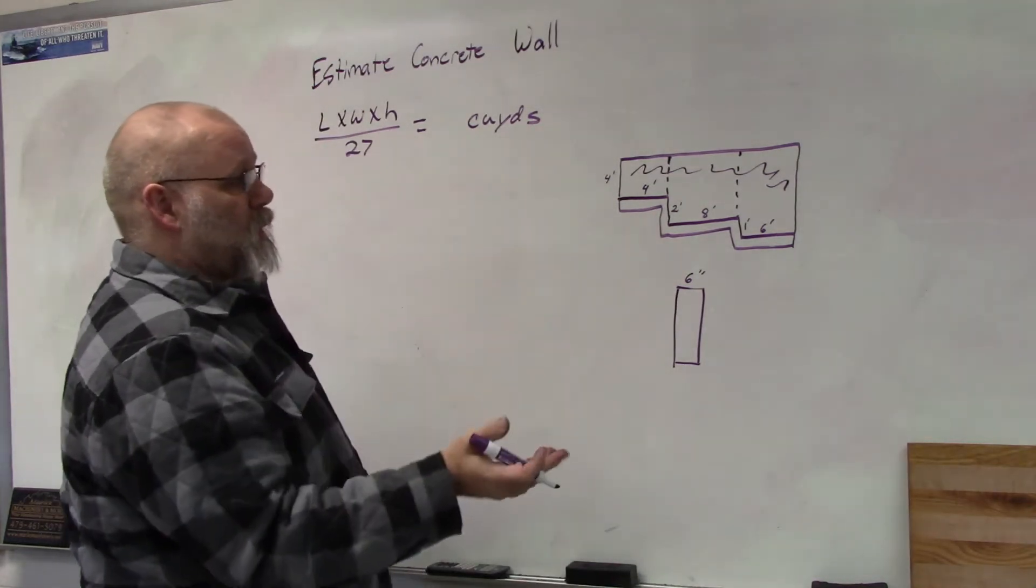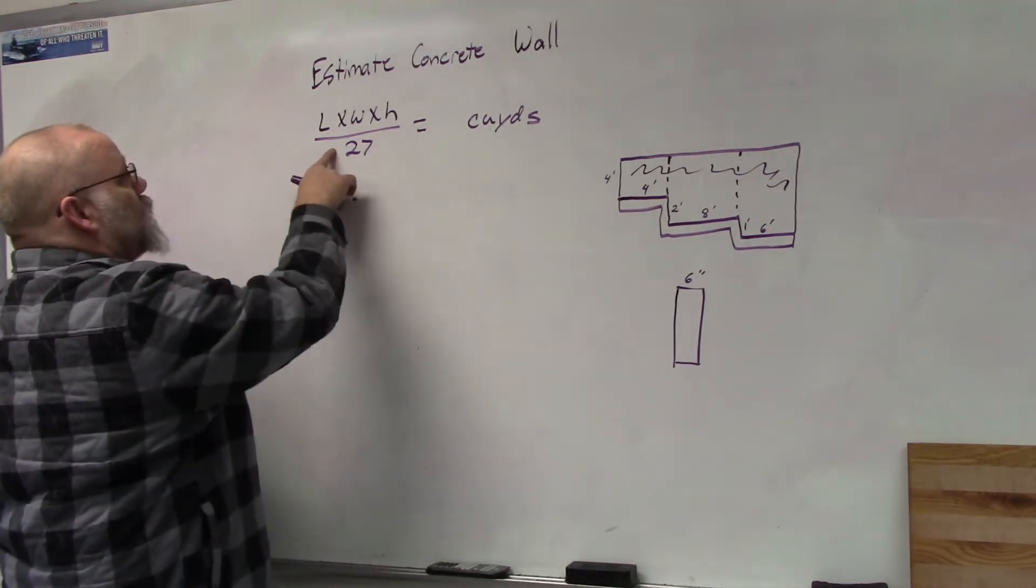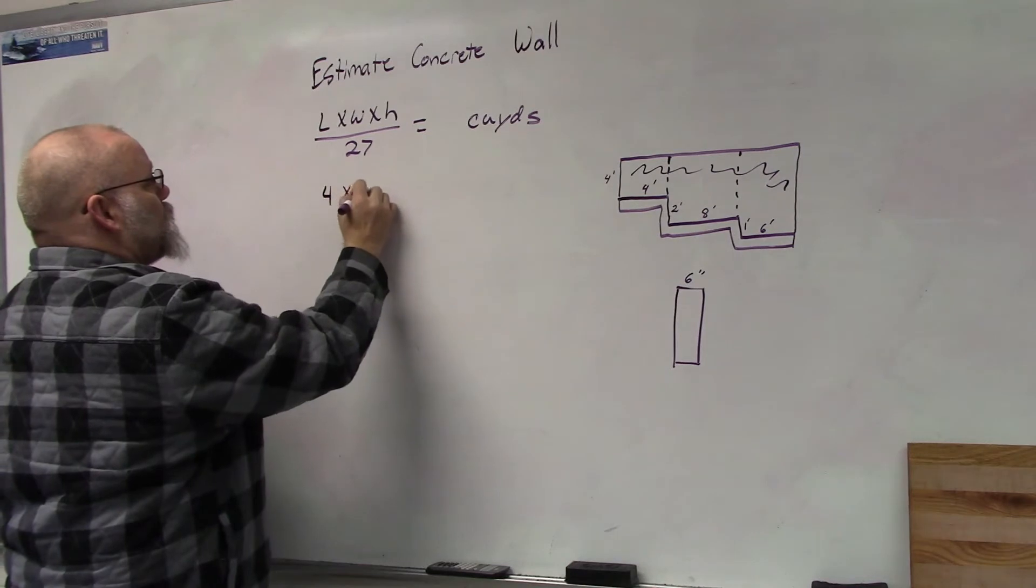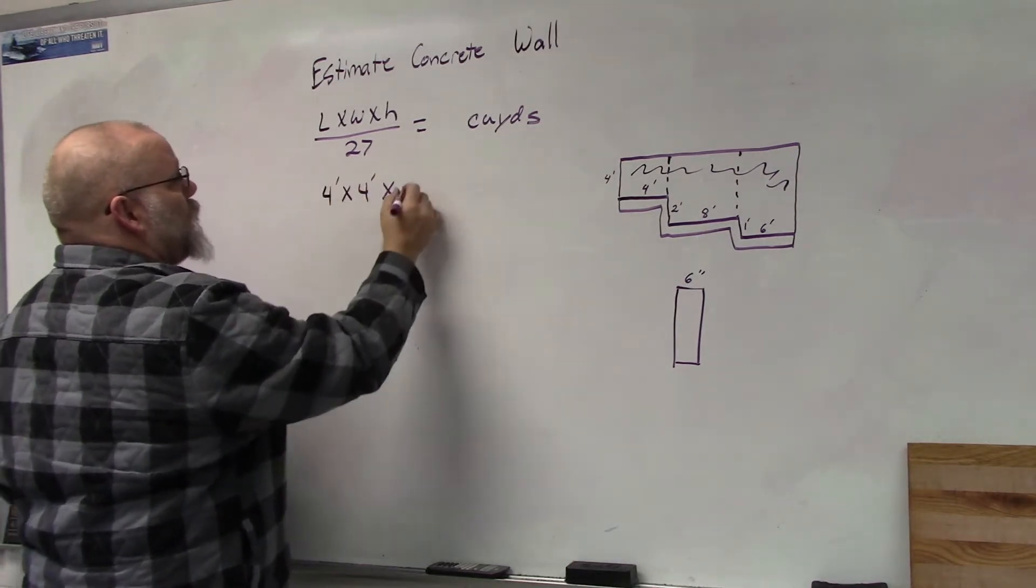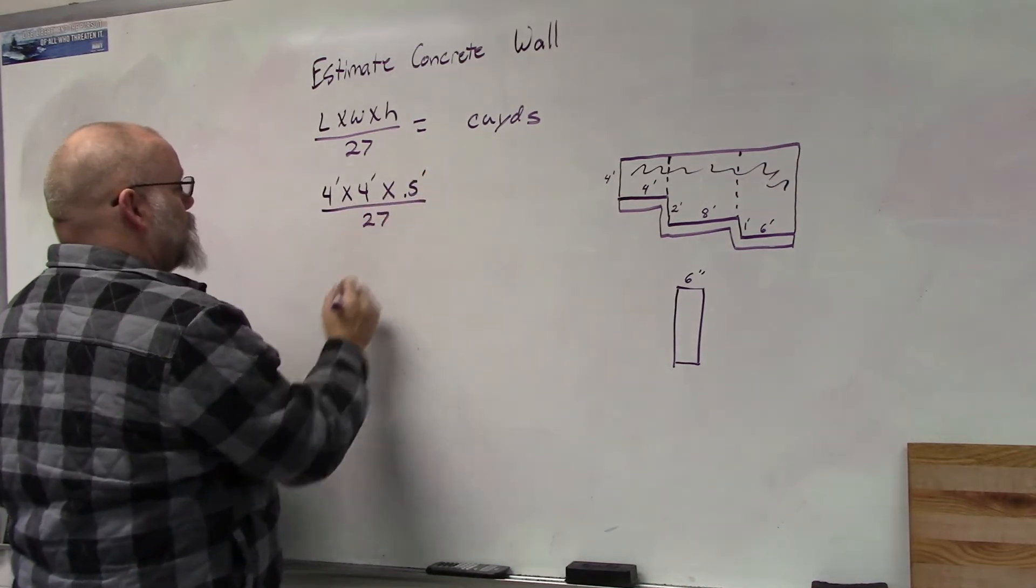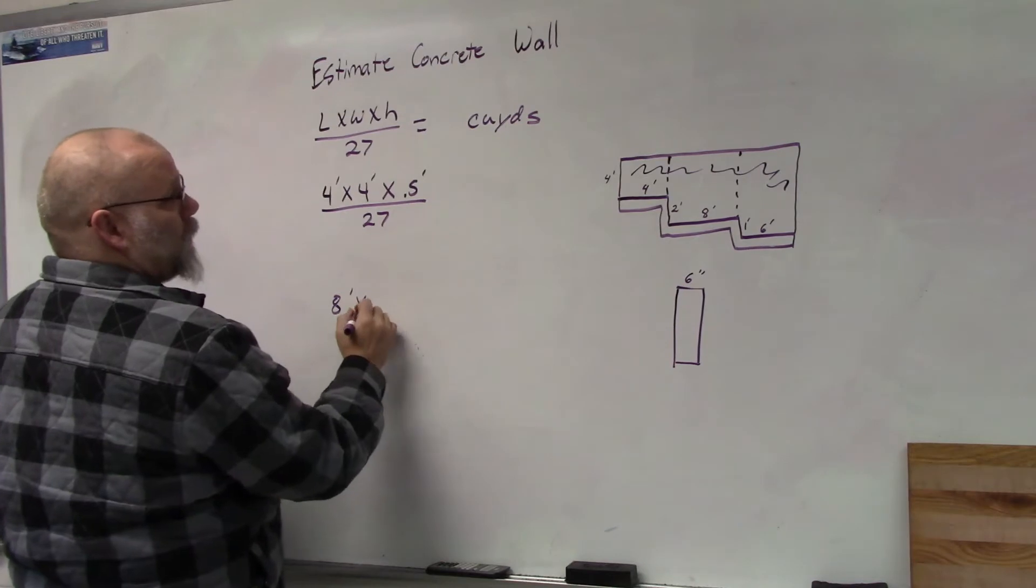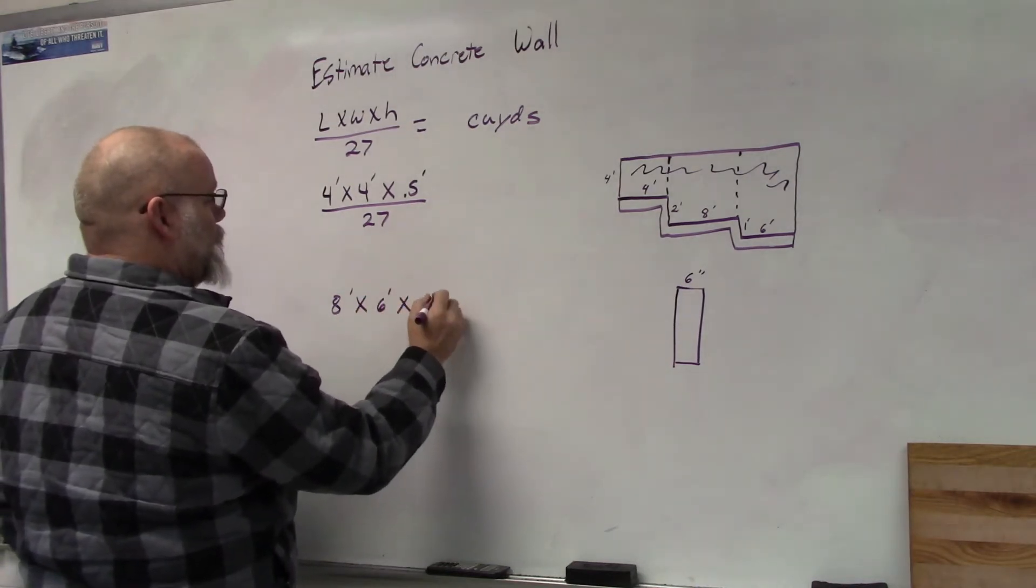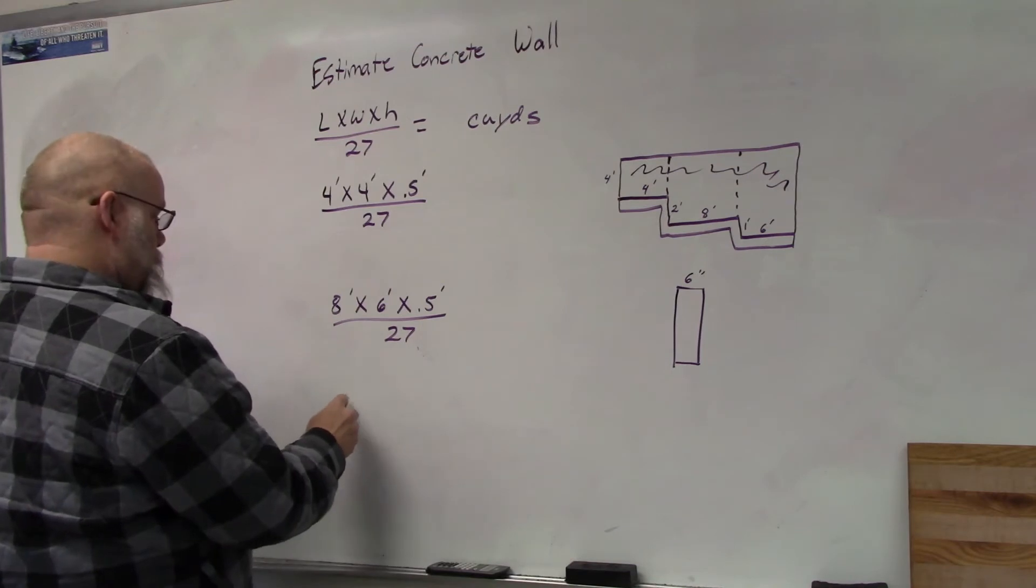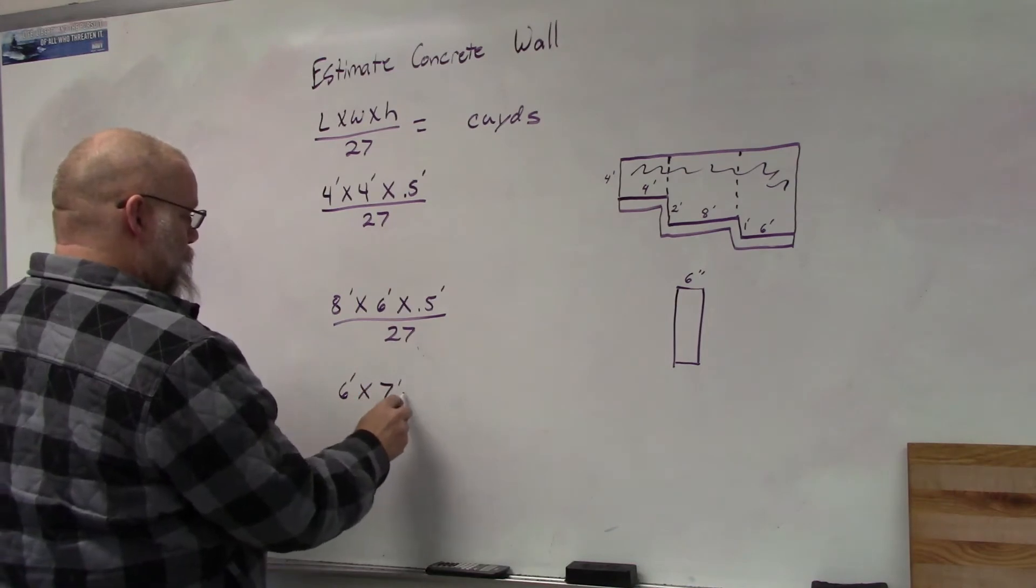Each one is going to be six inches wide. We're going to use this formula: length times width times height divided by 27, which will give us cubic yards. The first one would be four times four times 0.5 feet divided by 27. The second one would be eight feet by six feet by 0.5 feet all over 27. The third part would be six times seven feet times 0.5 feet all over 27.